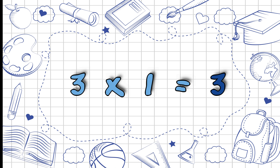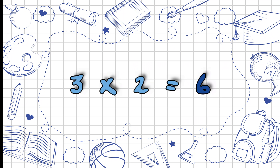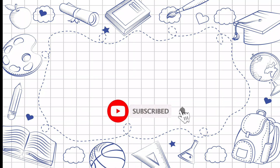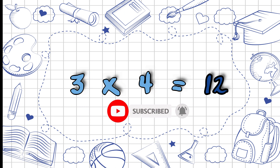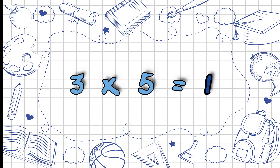3 1s are 3, 3 2s are 6, 3 3s are 9, 3 4s are 12, 3 5s are 15.